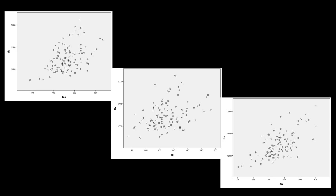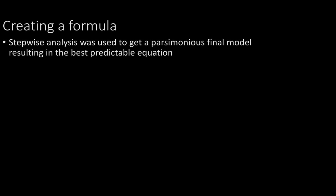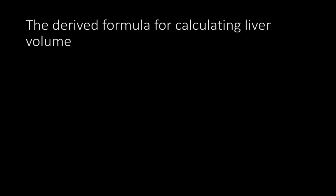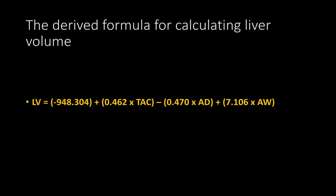The scatter plot shows how all three parameters correlated with total liver volume — note that all three parameters were calculated in millimeters. Using stepwise analysis to derive a parsimonious predictive model, the formula derived to calculate liver volume was: −948.304 + (0.462 × thoracoabdominal circumference in mm) − (0.470 × abdominal depth in mm) + (7.106 × abdominal width in mm).